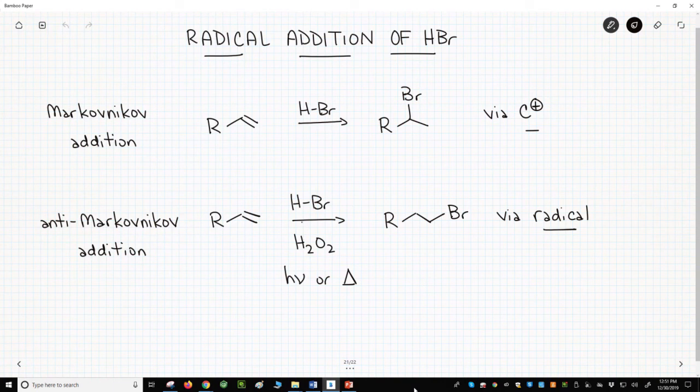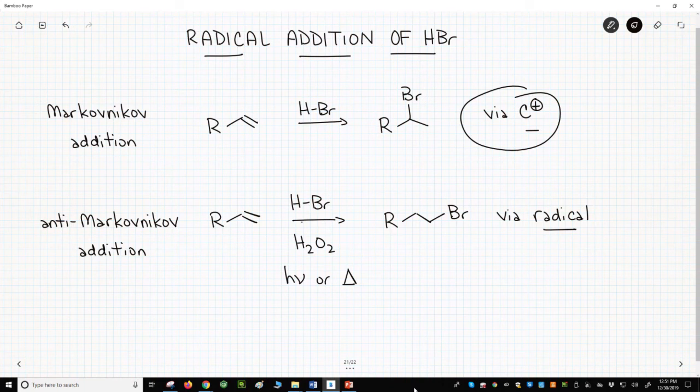The top reaction is a simple addition of HBr to an alkene. This reaction goes through a carbocation intermediate and gives the Markovnikov product in which the bromine ends up on the more substituted carbon of the alkene.